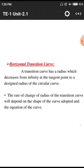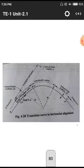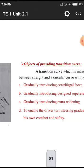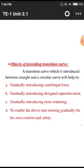In the horizontal transition curve, the diagram shows O as the center point, and we are interconnecting two different lanes into a circular path by means of a radius from the origin. The key principles are: we need to decrease centrifugal force, decrease super elevation, and introduce extra widening to that particular road.